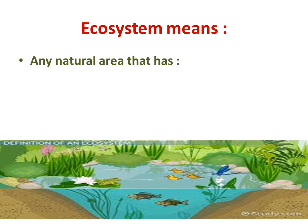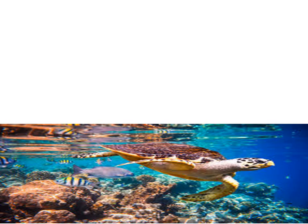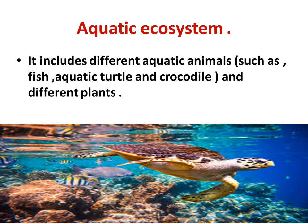Ecosystem means any natural area that has two things. The first is living organisms, such as plants and animals. The second is non-living things, such as water, soil, and air. Secondly, the aquatic ecosystem.